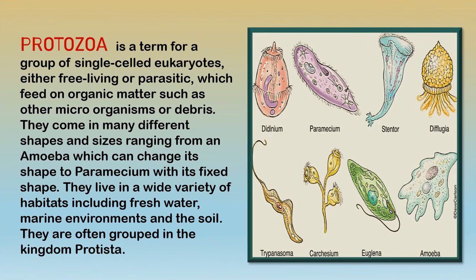The first phylum is Protozoa. These include organisms like Euglena, Amoeba, and Paramecium. They live in a wide variety of habitats — freshwater, marine environments, and soil — and come in various shapes and sizes, from the single-celled Amoeba to Paramecium with a fixed shape. They are often grouped in the kingdom Protista.